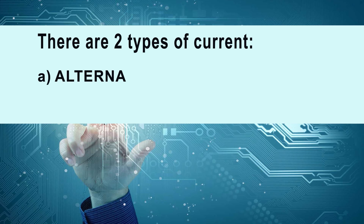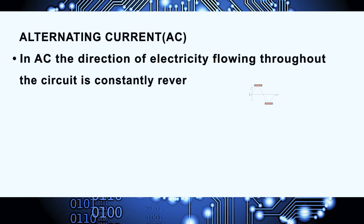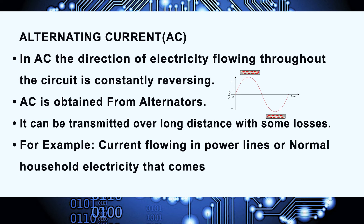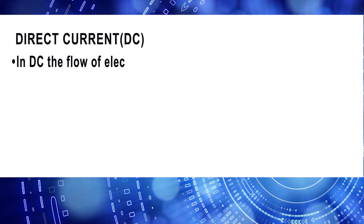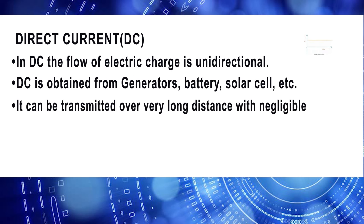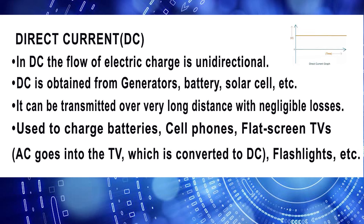There are two types of current: alternating current and direct current. In AC, the direction of electricity flowing throughout the circuit is constantly reversing. AC is obtained from alternators and can be transmitted over long distances with some losses. For example, current flowing in power lines or normal household electricity from a wall outlet. In DC, the flow of electric charge is unidirectional. DC is obtained from generators, batteries, solar cells, etc. It can be transmitted over very long distances with negligible losses and is used to charge batteries, cell phones, flat screen TVs, flashlights, etc.